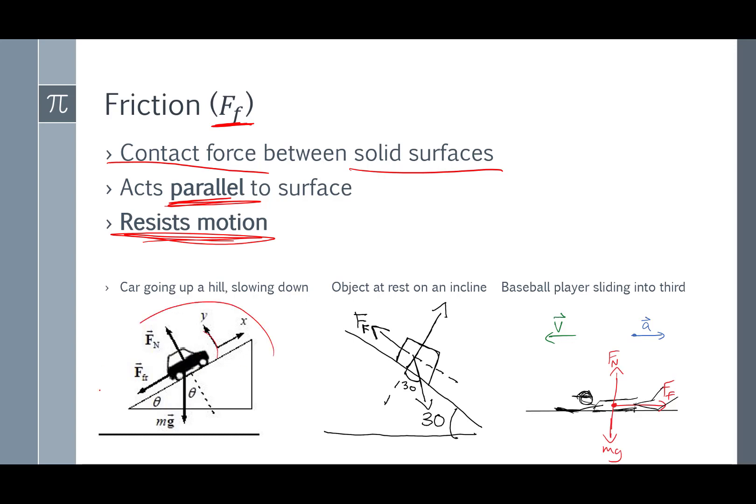So here's a free body diagram for a car going up a hill and slowing down. The velocity is up the hill. Gravity pulls straight down. The normal force pushes perpendicular to the surface. And friction pushes back against the car, pushes back against the motion of the car to try and slow the car down.